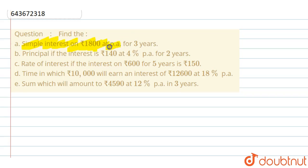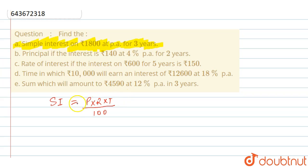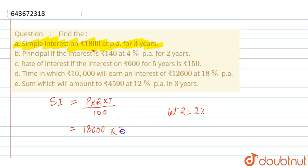Find the simple interest on ₹18,000 at a rate per annum for three years. The rate is not given in the question, so we consider rate as 2%. According to the formula, simple interest equals P into R into T upon 100. Here, principal is 18,000, rate is 2%, and time is 3 years, all divided by 100. We can cancel out the two zeros.